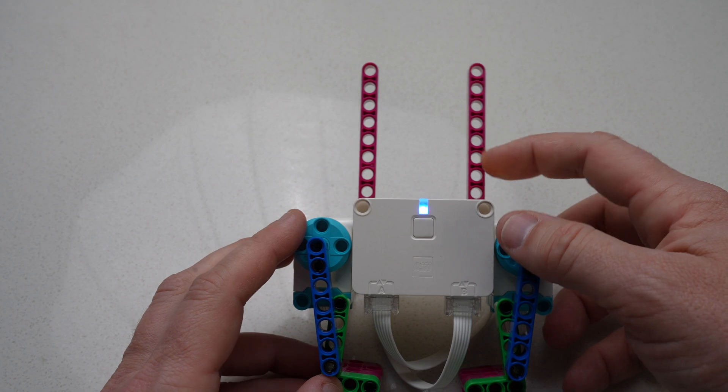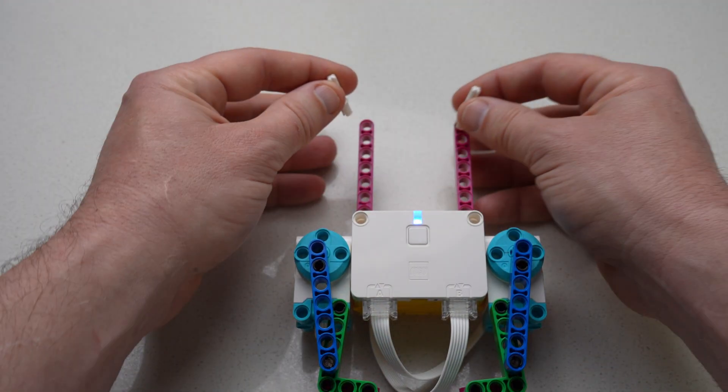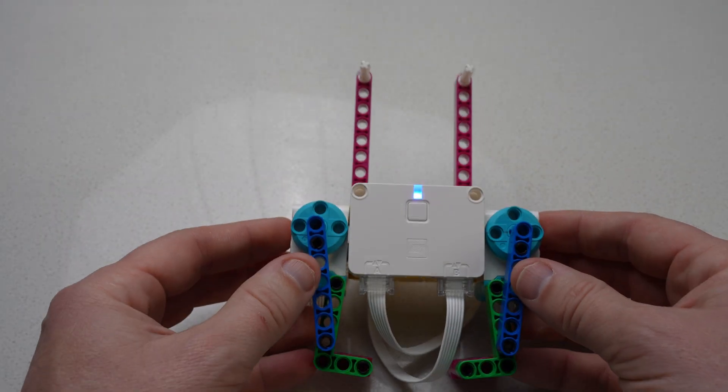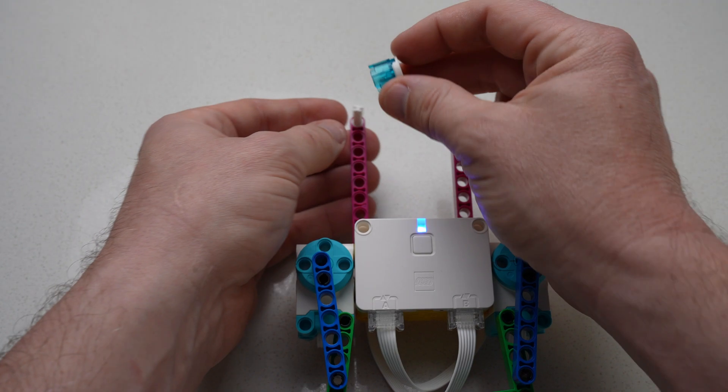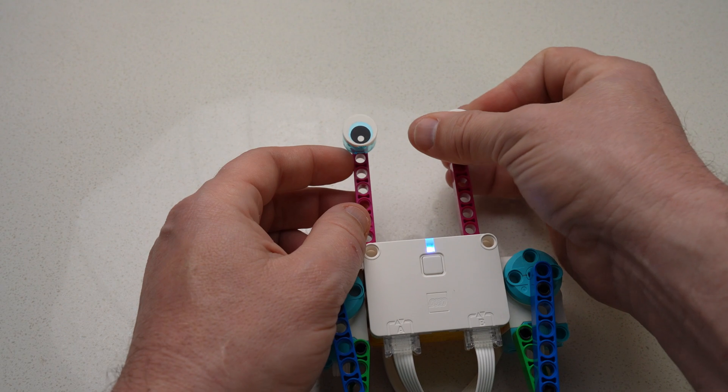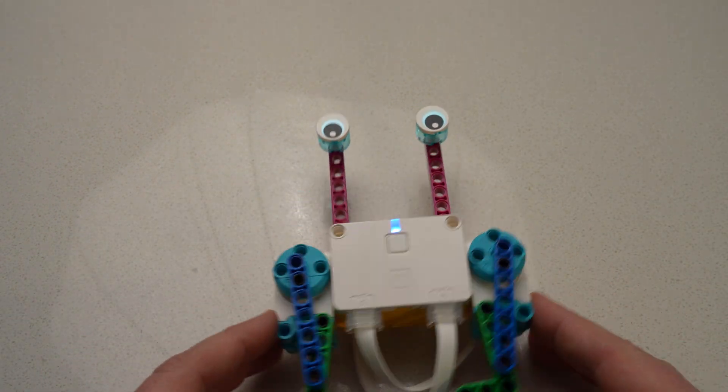We turn our Krabby Pokemon over, and we are ready to attach those eyes up at the top. There are lots of different ways to make eyes for robots. I just chose one that was left over from my moving bot that we built the other day, and we attached a clear cylinder that's blue with an eye onto it, and you can rotate those eyes around and make them look however silly you want.